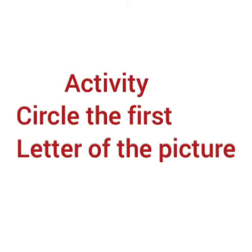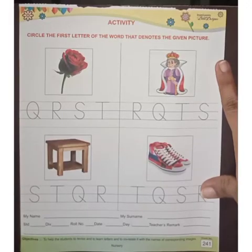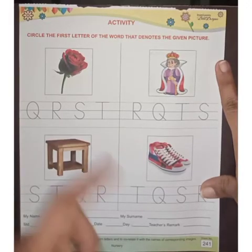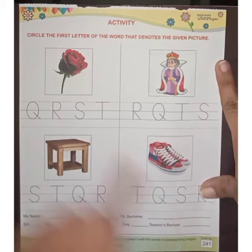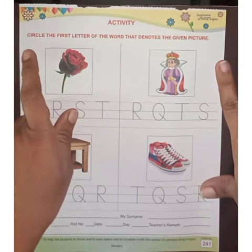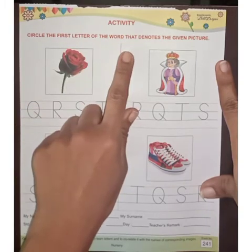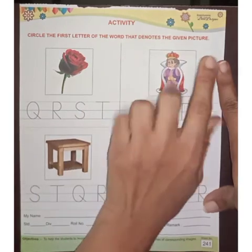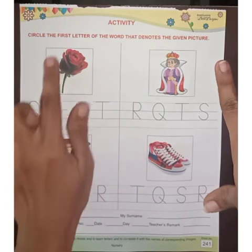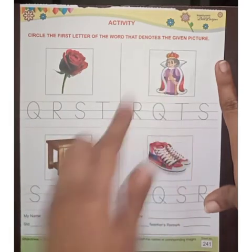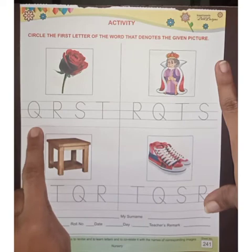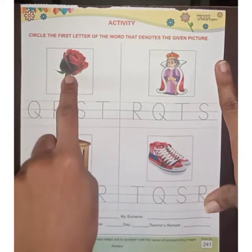Circle the first letter of the picture. Hello my dear students, today we are going to do an activity on our worksheet. Now today we are going to solve page number 241, which is an activity. We have to circle the first letter of the word that denotes the given picture. In this activity, we have to look at the pictures and identify the letter with which that picture starts.